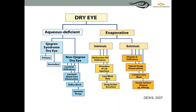Aqueous deficient dry eye can be Sjögren's syndrome in nature — primary or secondary. Secondary Sjögren's is linked to connective tissue disorders like rheumatoid arthritis, lupus, polymyositis, or scleroderma. Non-Sjögren's dry eye includes age-related changes in the lacrimal gland leading to reduced production, congenital alacrima where the lacrimal gland is absent, and lacrimal gland obstruction as seen in trachoma, Stevens-Johnson syndrome, or chemical and thermal injuries.